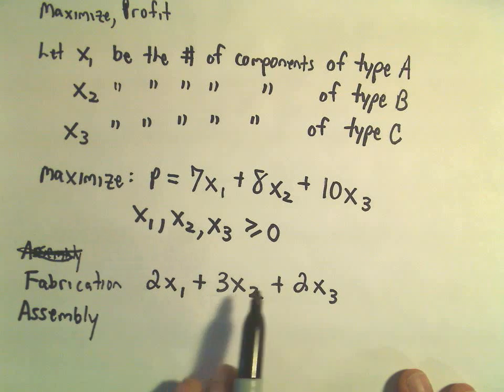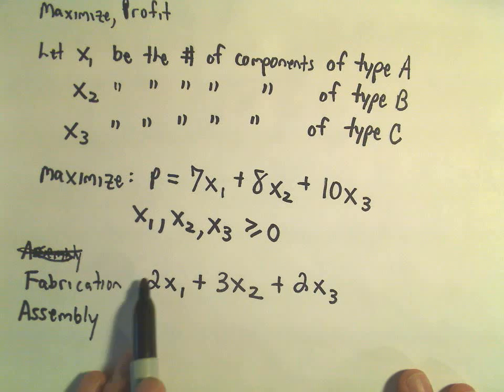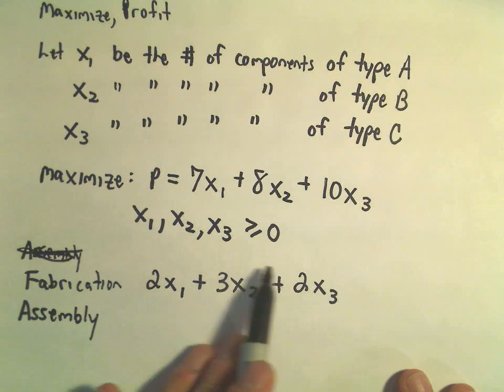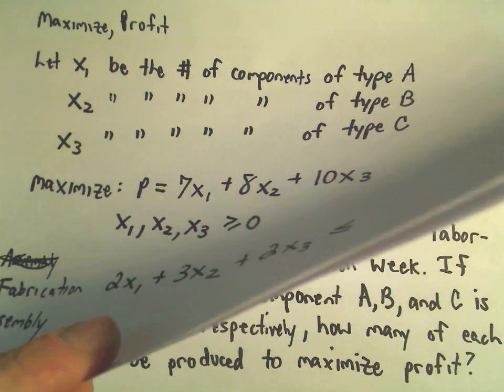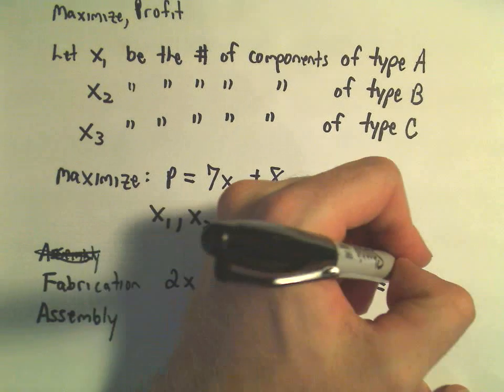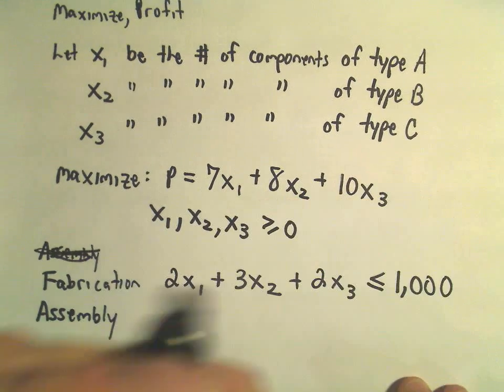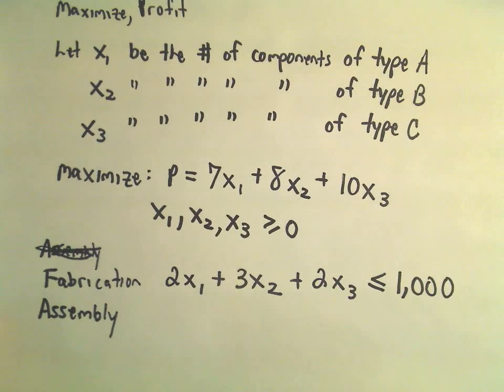If we multiply them by respectively 2, 3, and 2, add them together, this is how much time we've spent fabricating those components. We said we had, at most, 1,000 hours to spend on this process. So that's another one of our inequalities.